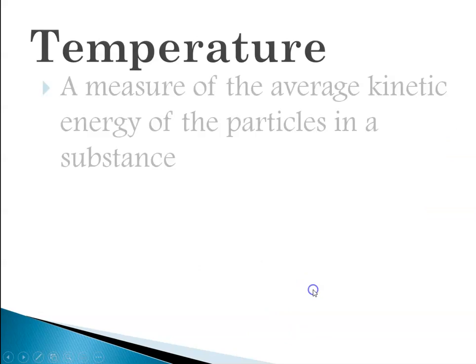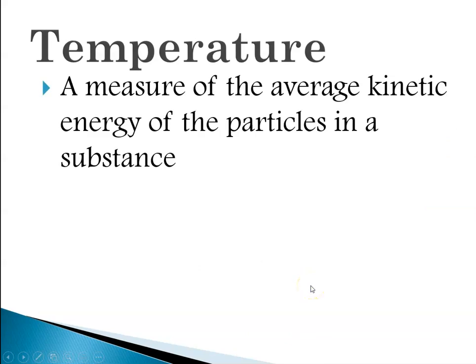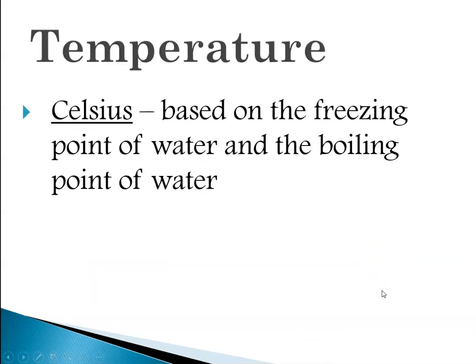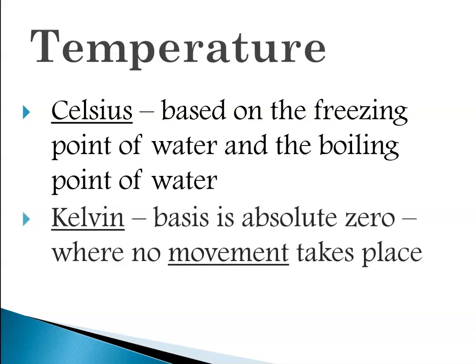Another measurement that we'll talk about a lot this year is temperature. When you're measuring temperature you're actually measuring the average kinetic energy of the particles in a substance. Scientists use two temperature scales generally, the Celsius scale and the Kelvin scale. You might have learned about the Fahrenheit scale but scientists don't use that. So it's useful to know that the Celsius scale is based on the freezing point and boiling point of water. And the Kelvin scale is based on something called absolute zero, which is the lowest possible temperature in the universe. And that corresponds to the temperature at which no movement would take place, and by movement I mean even atoms and electrons etc.